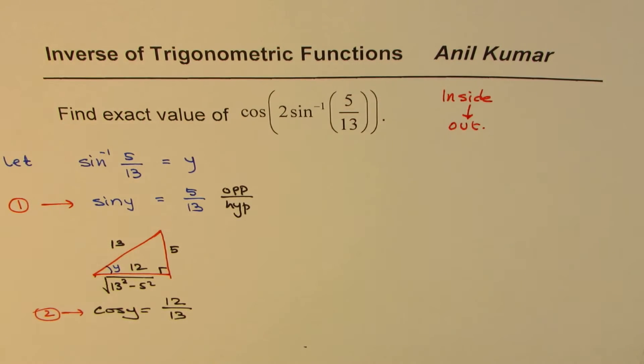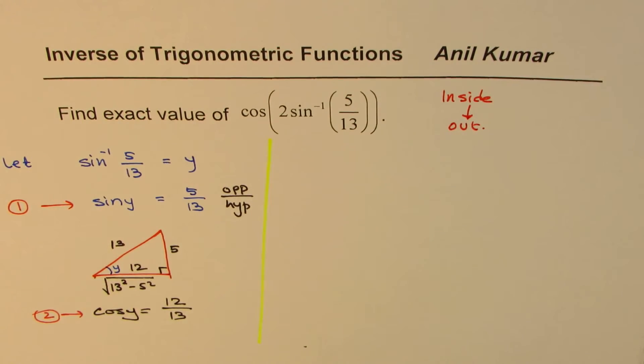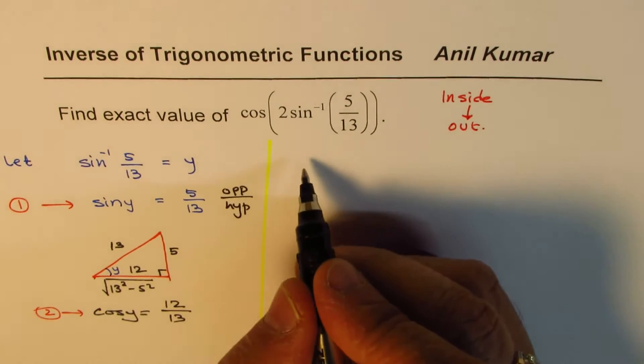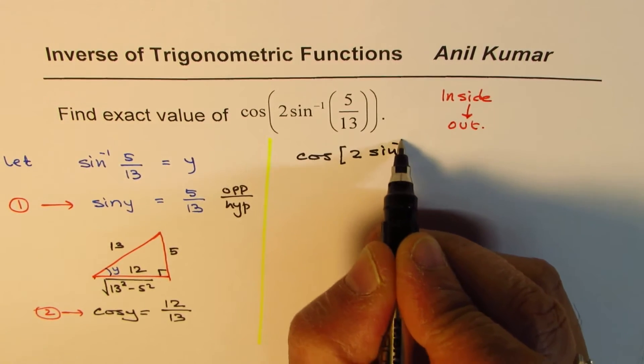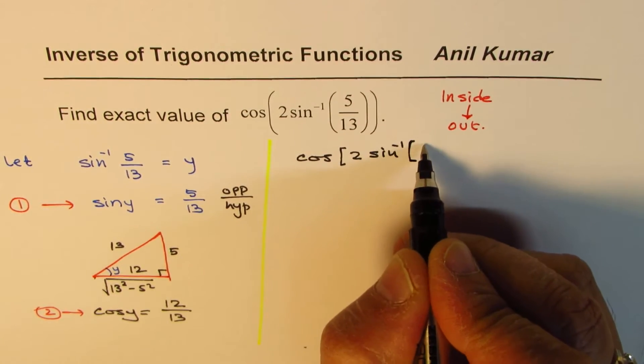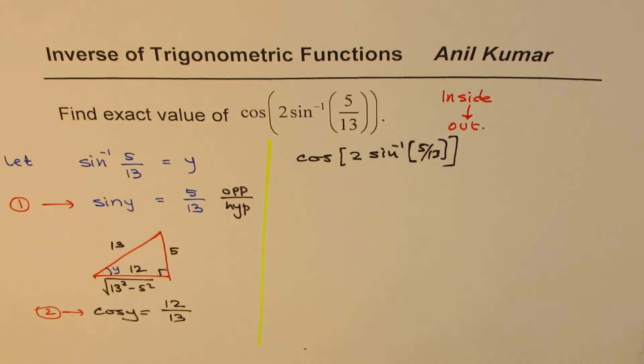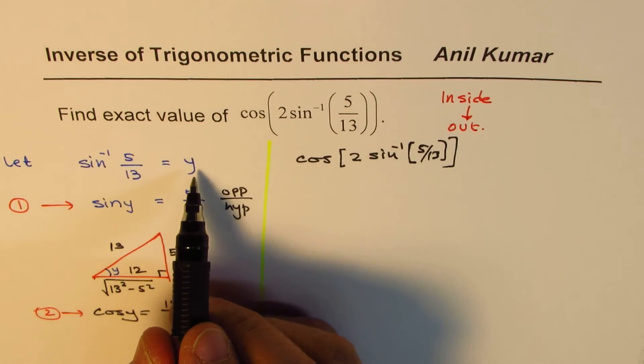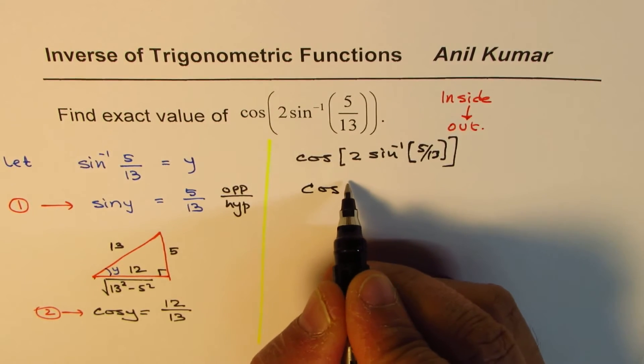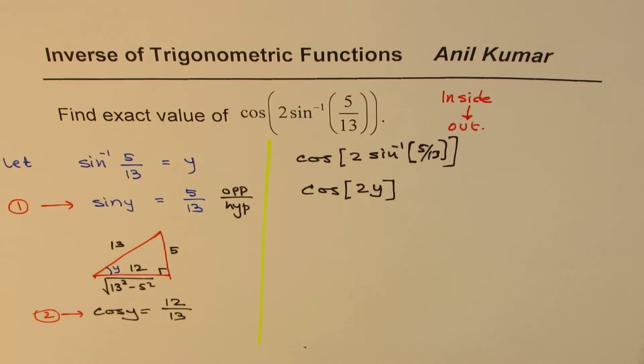Now let's get back to our equation, which is right there. So we will try to solve this equation now. So what we are given here is cos(2 sin^(-1)(5/13)). Now we have assumed sin^(-1)(5/13) as y. So we could write this as cos(2y).